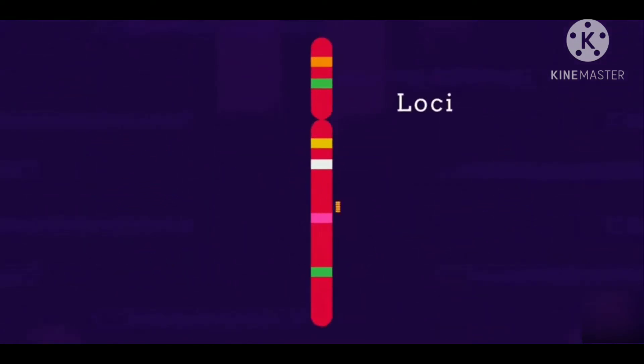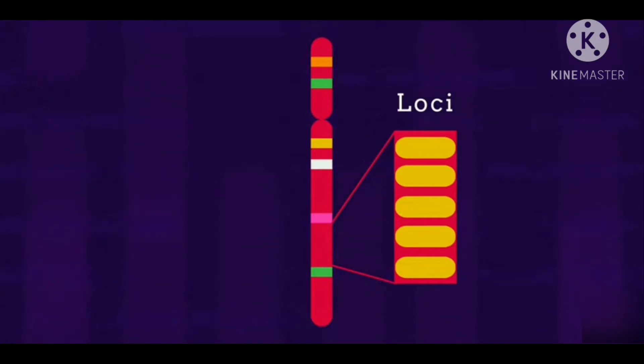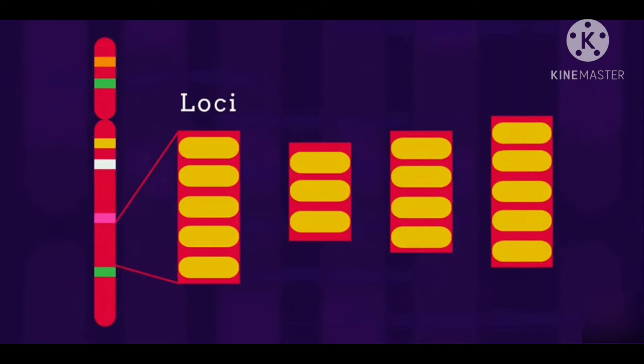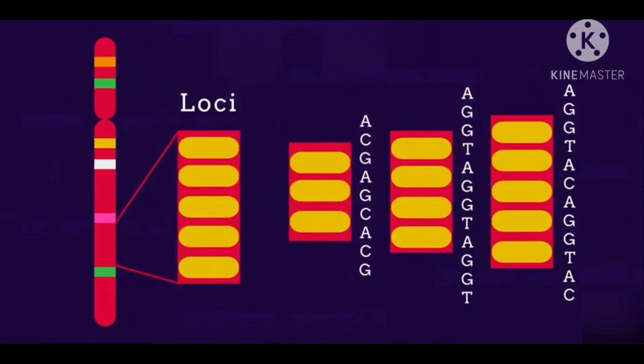However, there are sections or loci of chromosomes where instead of a gene consisting of a long sequence of bases, there are much shorter sequences of 3, 4, or 5 bases that are repeated many times. For example, these repeated sequences are called short tandem repeats or STR.